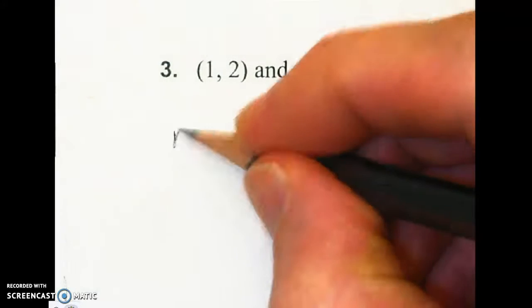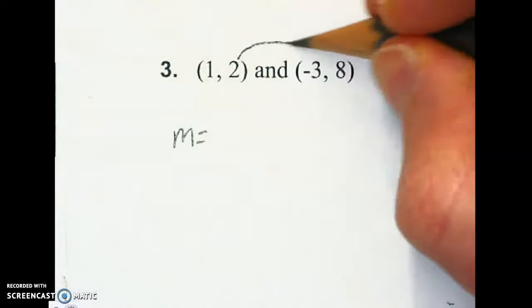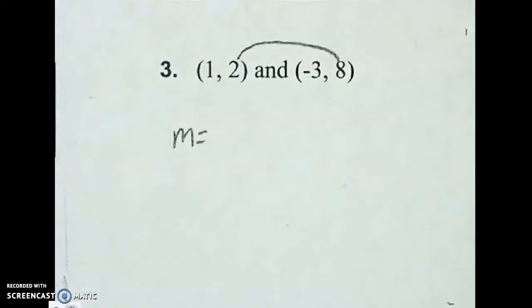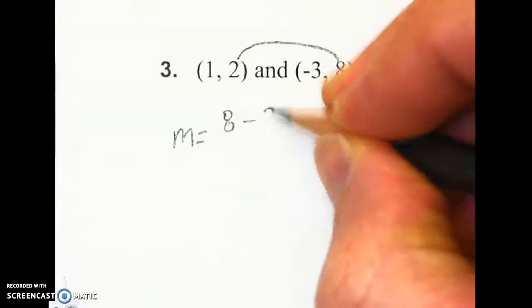Alright. To get my slope, it's really easy. I'm just going to subtract the y values and put them on top. The two numbers that are second in the coordinate are the y ones. I normally like to subtract from here over to here. So that's what I'm doing. I'm just going to do 8 minus 2 on top.